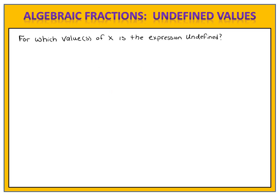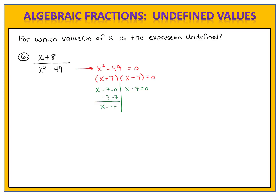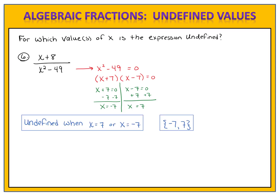Let's end with one last example: x plus 8 divided by x squared minus 49. You might recognize that denominator as a difference of two perfect squares which can be factored. Please pause the video and find the undefined values. We begin by looking at the denominator x squared minus 49, setting it equal to zero, then factoring to x plus 7 times x minus 7 equals zero. We look at each factor separately and set it equal to zero, finding that our excluded values are negative 7 and positive 7. So this fraction is undefined when x equals 7 or negative 7, and using set notation, put the smaller number first.